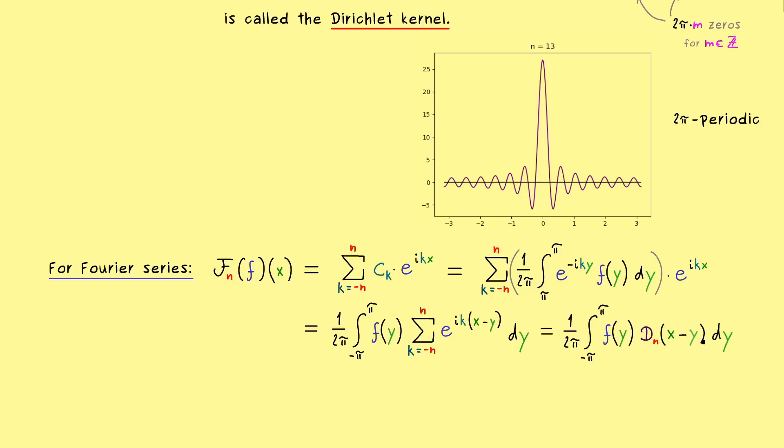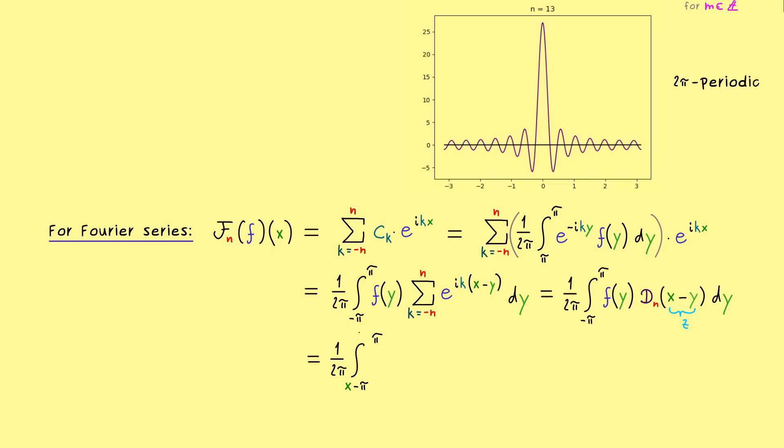And there I can tell you, this explains the name kernel because it means it's inside a whole integration operation. Moreover, we can also shift the variables from D_n to f by substituting x minus y. So let's quickly do that. Let's call x minus y, z. And then you can quickly check that the boundaries will shift to x minus π and x plus π. However, since we are 2π periodic in f and D_n, this shift does not do anything anyway.